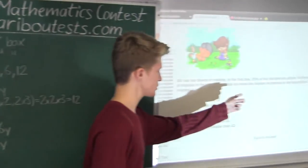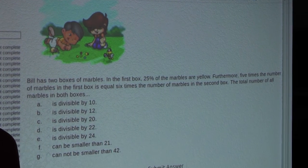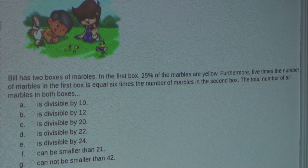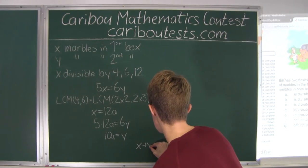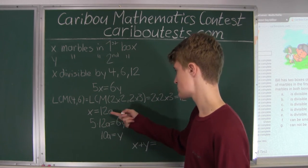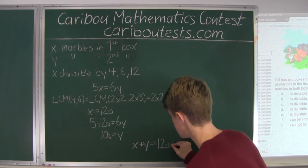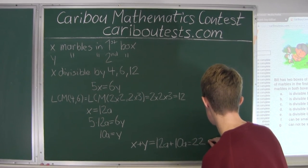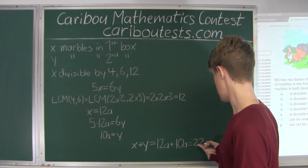From our question, the last part asks for the total number of all marbles in both boxes. That means we want X + Y = 12a + 10a = 22a. Therefore, the total number of marbles in both boxes must be divisible by 22.